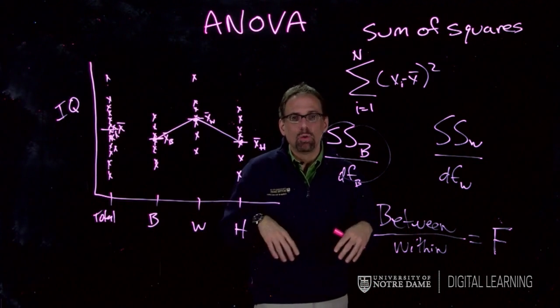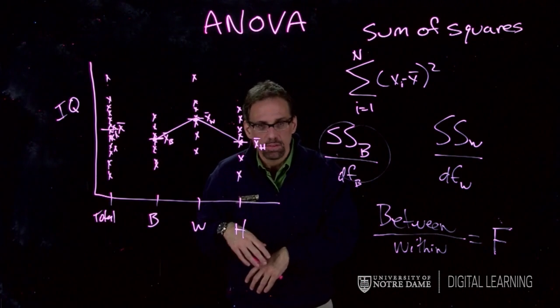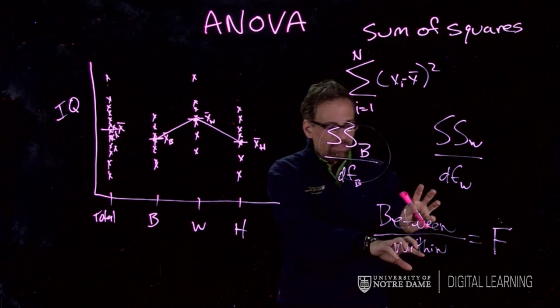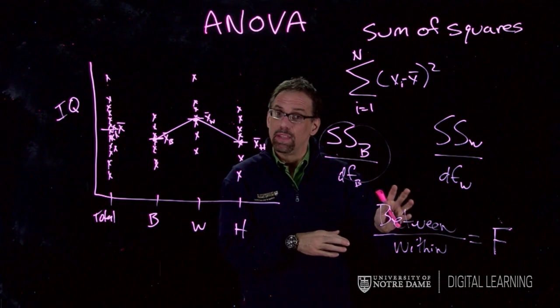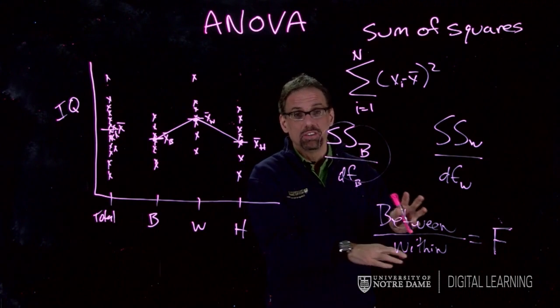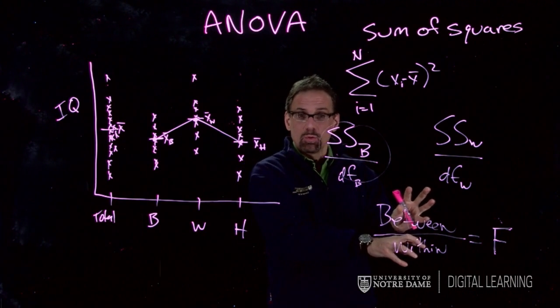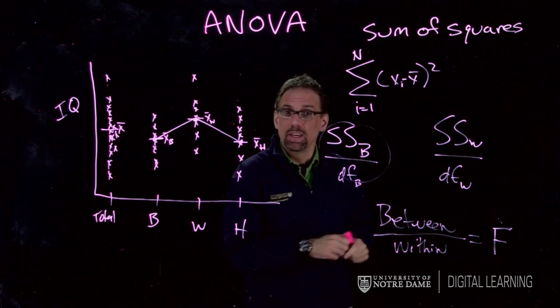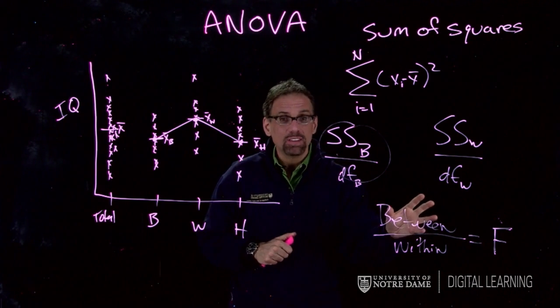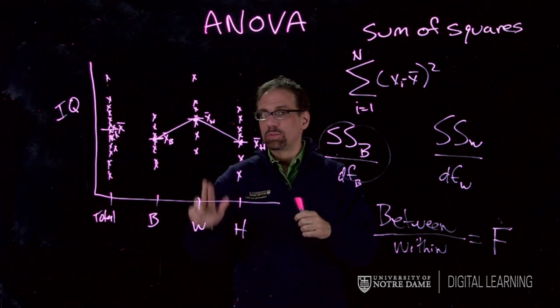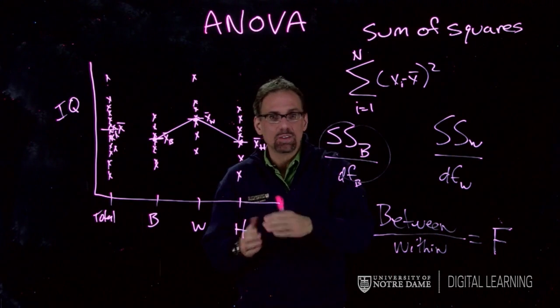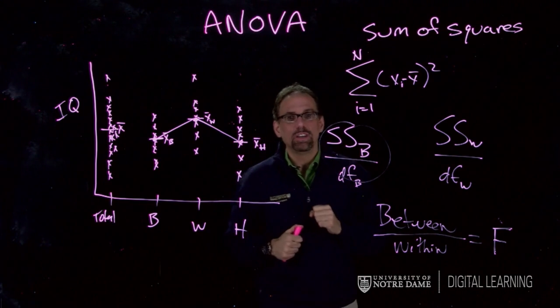Whenever F is below 1.0, you know there's no relationship. But if it's over 1.0, there might be something there. It's got to be a certain size - just being over 1.0 doesn't get you there. But if it's over 1.0, we'll go to the table and take a look to figure out whether it really is significant. The idea is if between is high, meaning the difference between the groups means something relative to what's going on inside the groups, then we've got something. That's what ANOVA is all about.